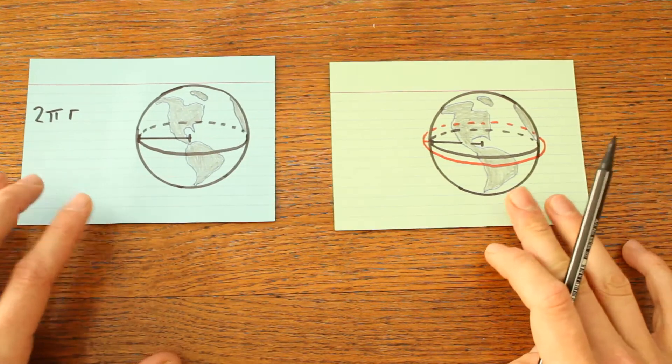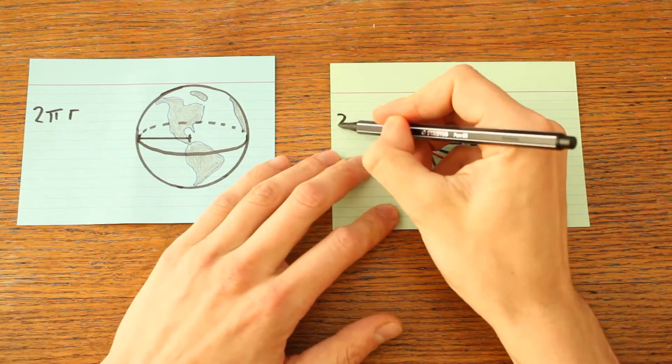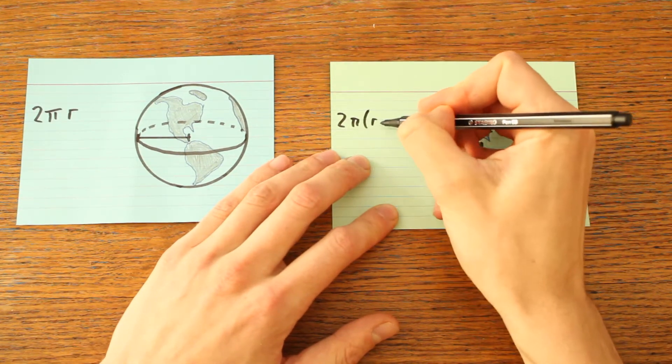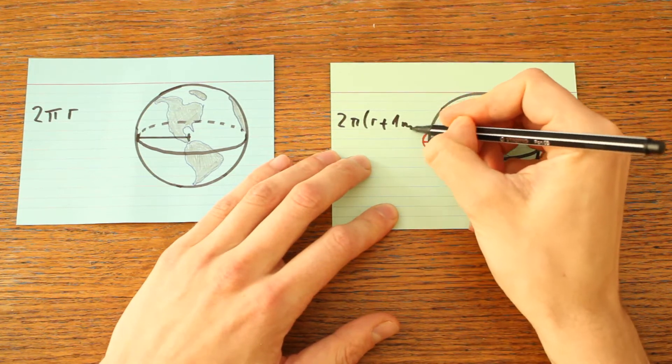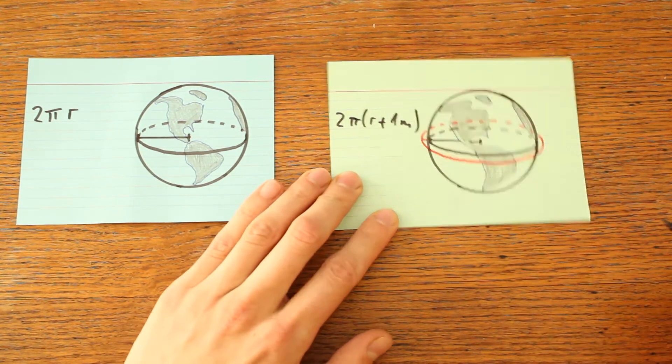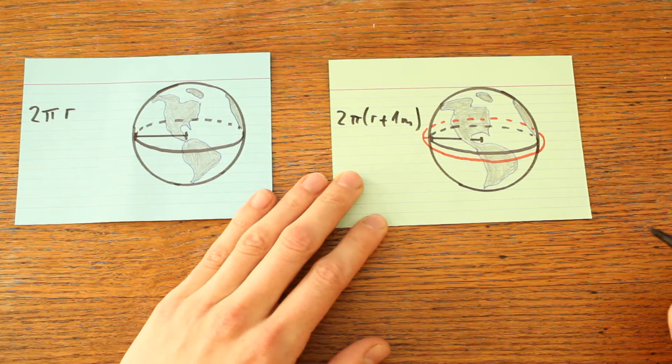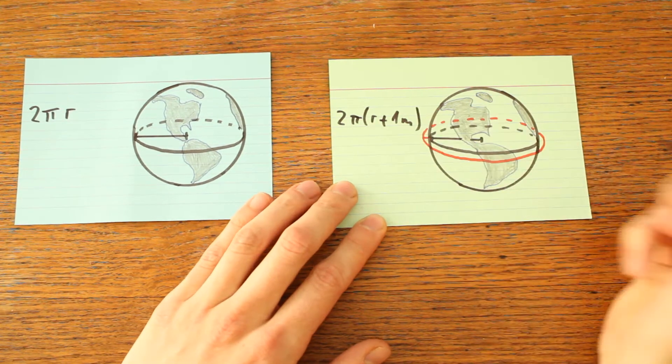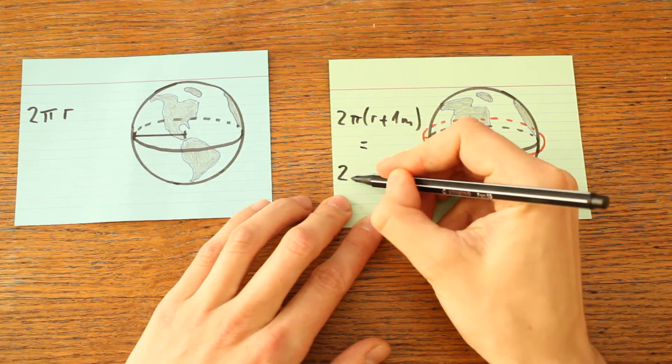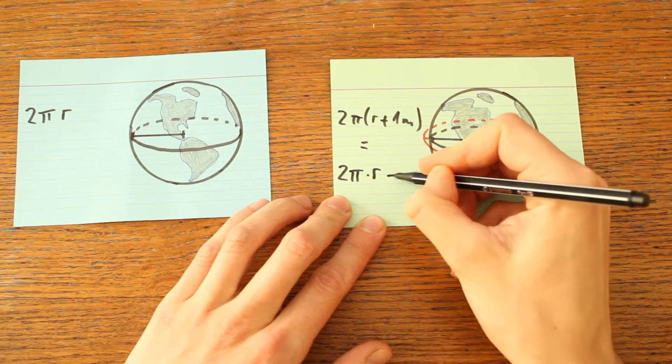And the second ribbon, that's 2 times pi times r plus 1, one meter more, three feet more. The radius is just a bit increased because it's running above the ground. So this is 2 times pi times the Earth radius plus 2 times pi times 1 meter.